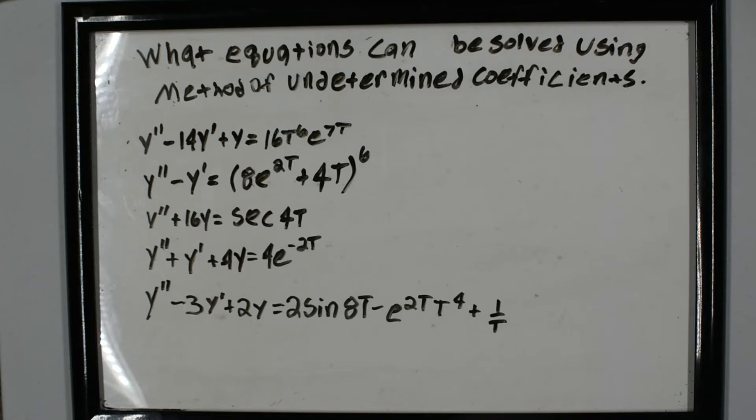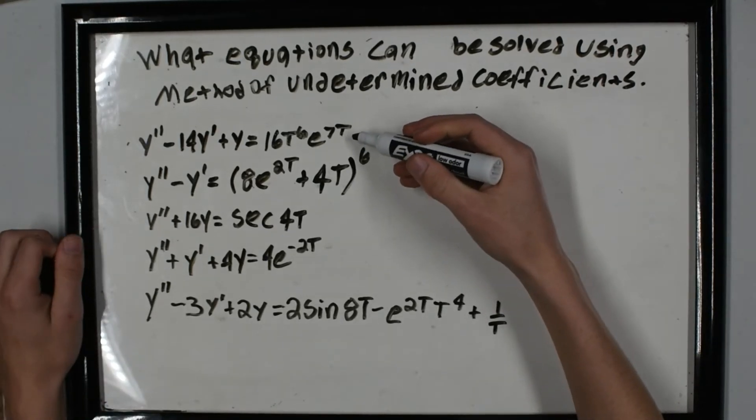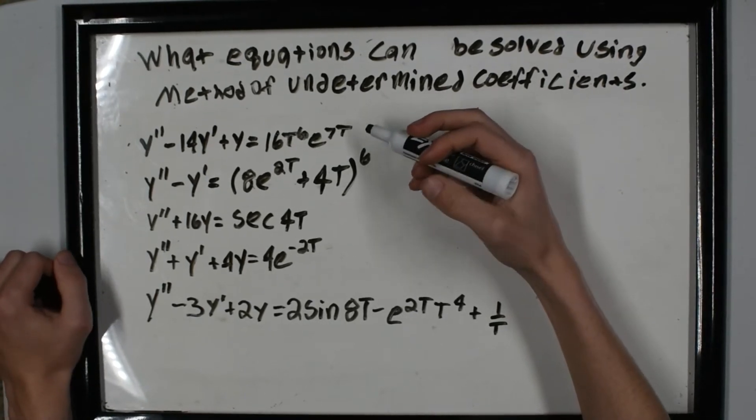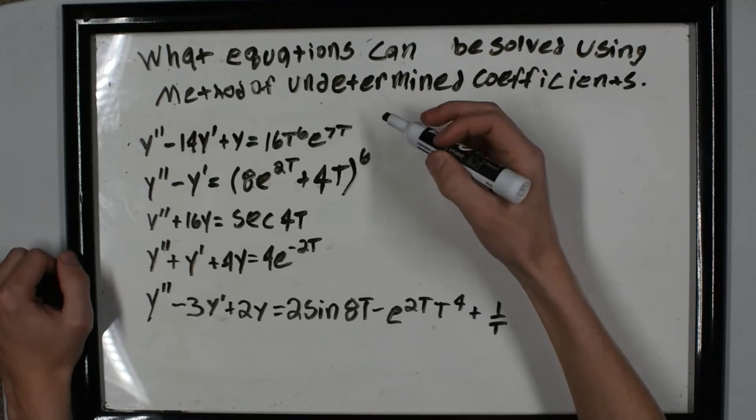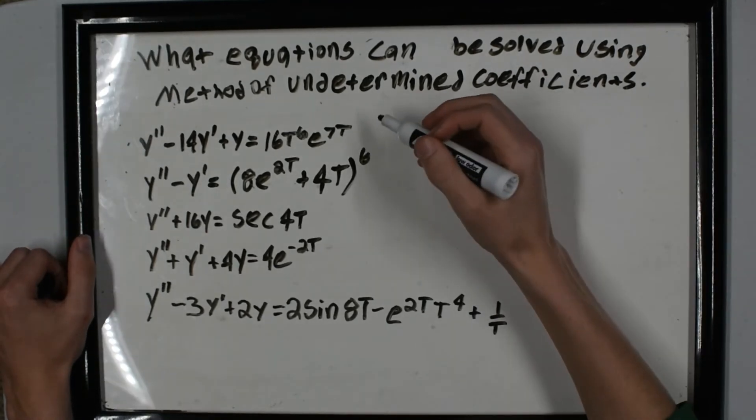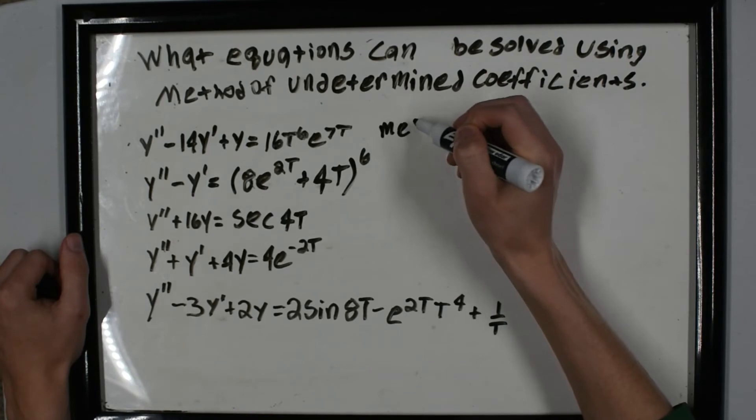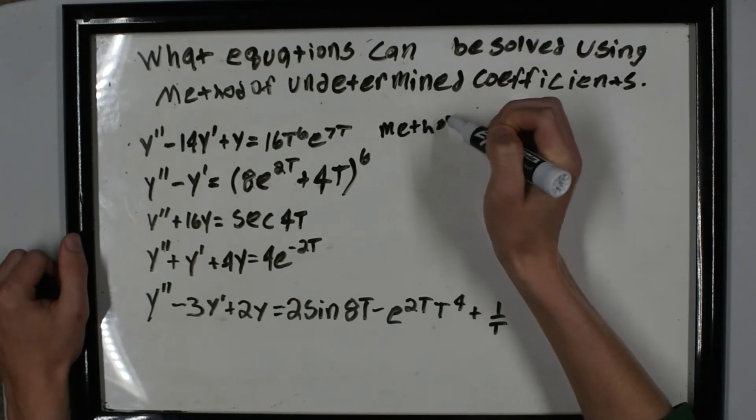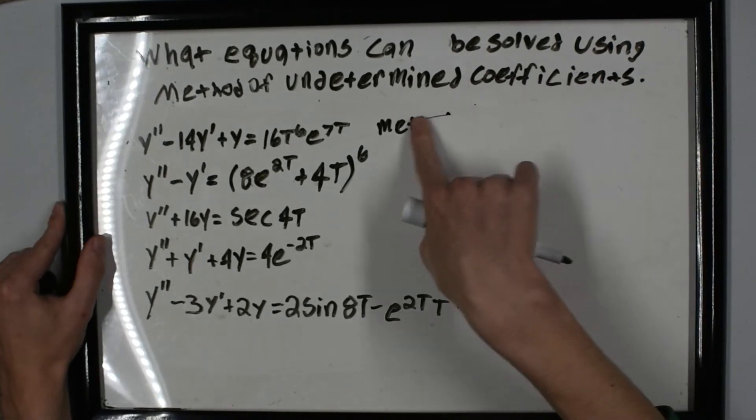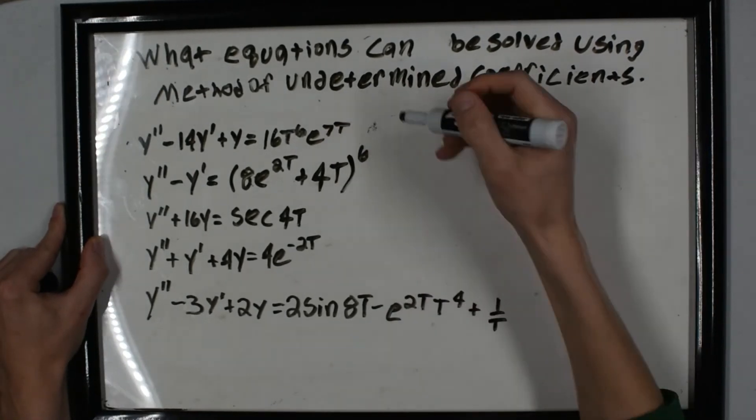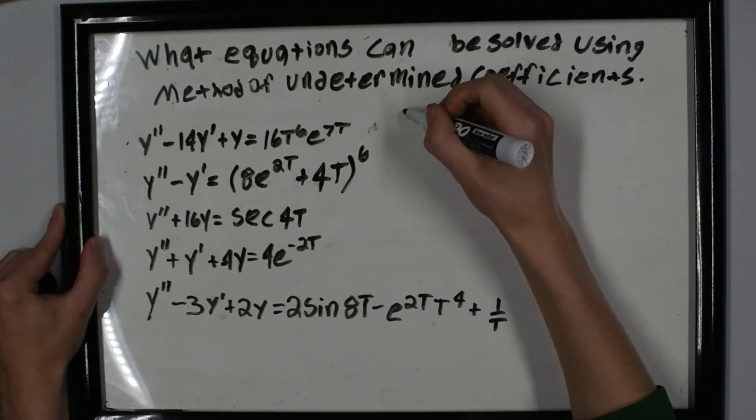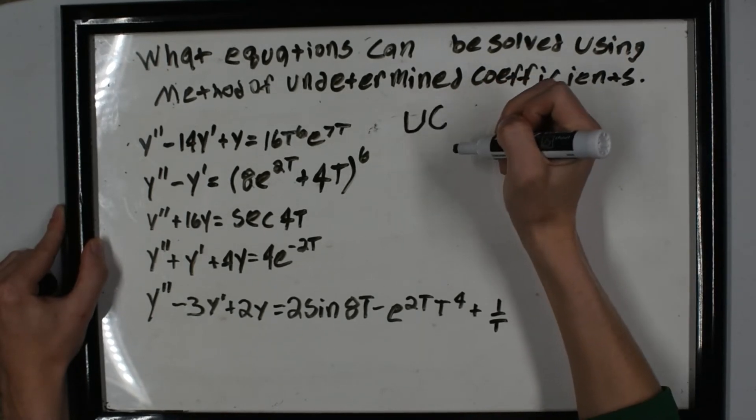So the first one here—this can be solved using what? Well, since it's t's and e's only, it can be solved using the method of undetermined coefficients. Let's call undetermined coefficients UC to save some writing.